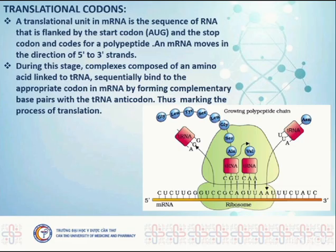Translational Codons. A translation unit in mRNA is the sequence of RNA flanked by the start codon AUG and the stop codon, which encodes a polypeptide. The mRNA moves in the 5' to 3' direction. During this stage, complexes composed of an amino acid linked to tRNA sequentially bind to the appropriate codon in mRNA by forming complementary base pairs with the tRNA anticodon, thus marking the process of translation.